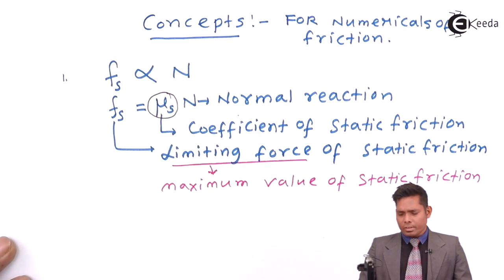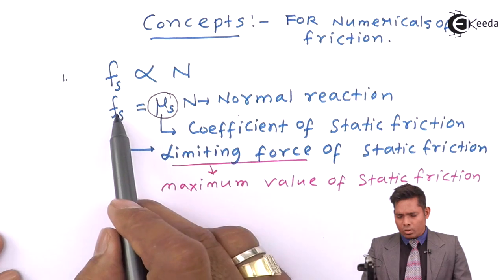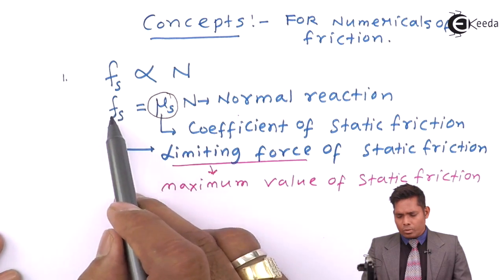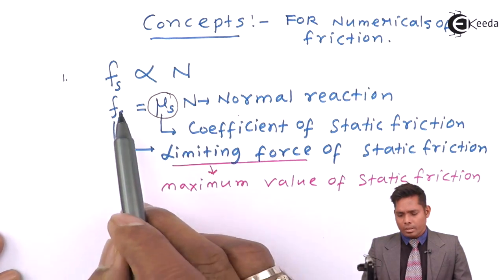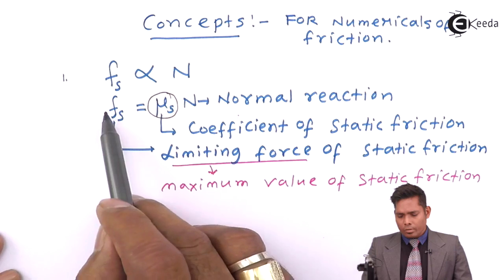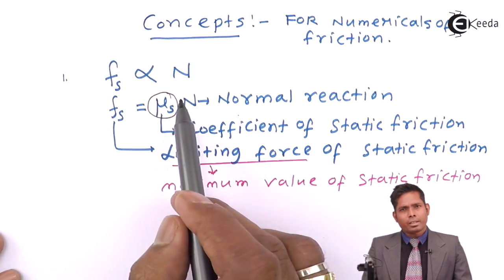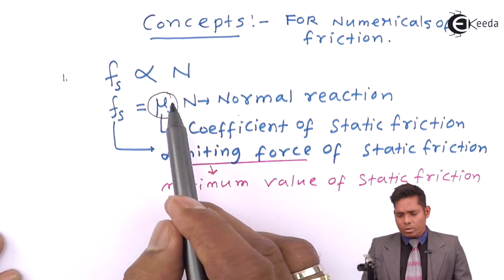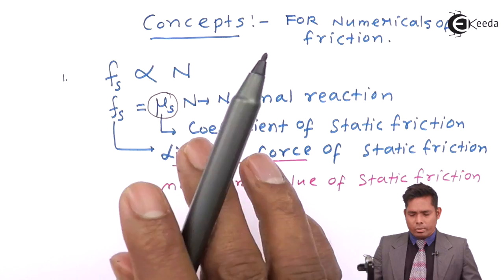The coefficient of static friction has no unit, because it is the ratio of frictional force to normal reaction. Normal reaction itself is a force, so force divided by force gives a dimensionless quantity — it has no unit.